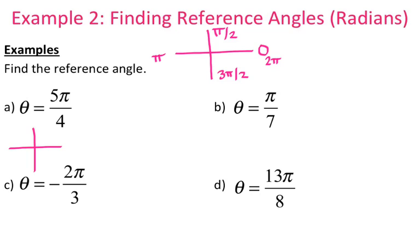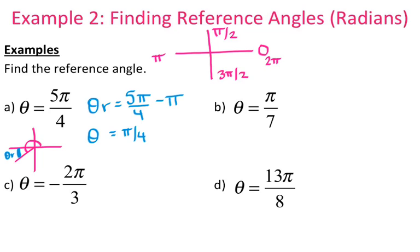So 5 pi over 4: 5 pi over 4 is bigger than pi, right? Because pi is 1 pi, and 5 over 4 is 1.25 pi. So that puts us in the third quadrant. Since I'm in the third quadrant, here's my reference angle — it's that little wedge sitting against the x-axis. I've gone past pi radians, so I need to figure out what this little extra piece is. To find my reference angle, I take 5 pi over 4 minus pi. So 5 pi over 4 minus pi is pi over 4 — that's your reference angle. You can use a calculator if you struggle with fractions: it's 5 fourths minus 1, which gives you 1 fourth.